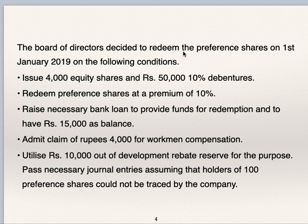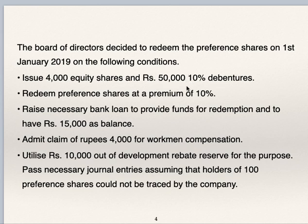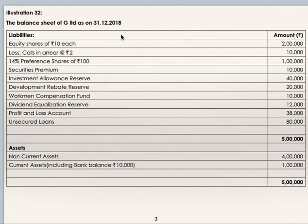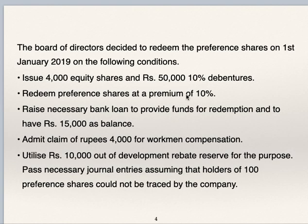The board of directors decided to redeem preference shares on 1st January 2019 on the following conditions. They have decided to redeem preference shares. Issue 4,000 equity shares and Rs. 50,000 worth of 10% debentures. By fresh issue of 4,000 equity shares and Rs. 50,000 they will receive by issuing debentures. Preference share capital of Rs. 1,00,000 is to be redeemed at a 10% premium, i.e. Rs. 10,000.